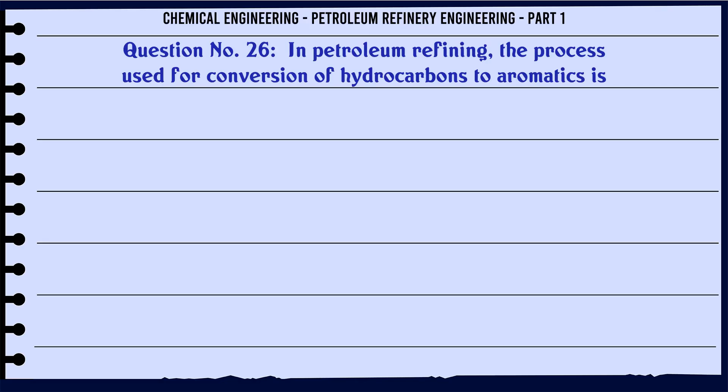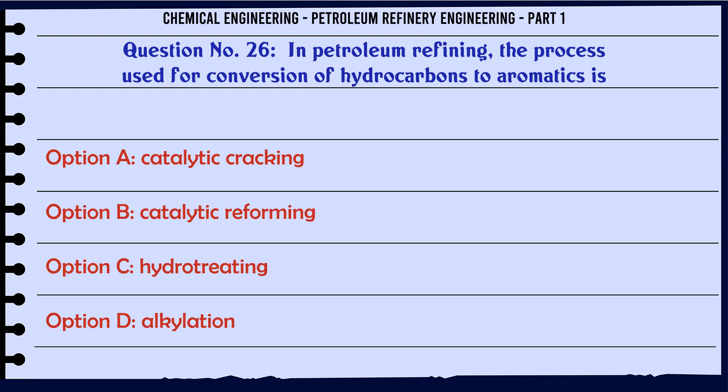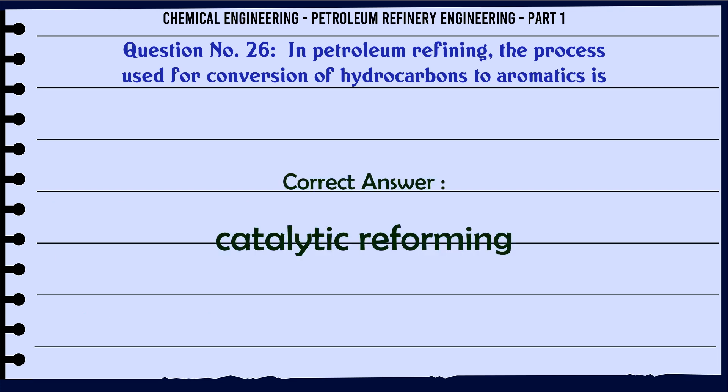In petroleum refining, the process used for conversion of hydrocarbons to aromatics is: A. Catalytic cracking, B. Catalytic reforming, C. Hydrotreating, D. Alkylation. The correct answer is Catalytic reforming.